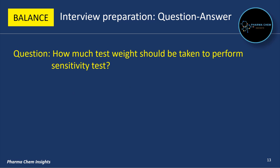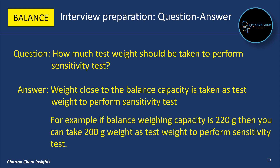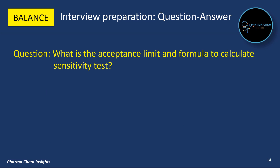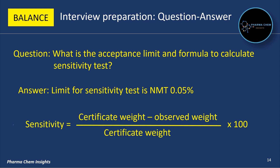Next question: how much test weight should be taken to perform the sensitivity test? A weight close to the balance capacity is taken as the test weight. For example, if the balance weighing capacity is 220 grams, then you can take a 200-gram weight as the test weight. The acceptance limit for the sensitivity test is not more than 0.05%. The formula to calculate sensitivity is: Sensitivity = ((Certificate Weight − Observed Weight) / Certificate Weight) × 100.